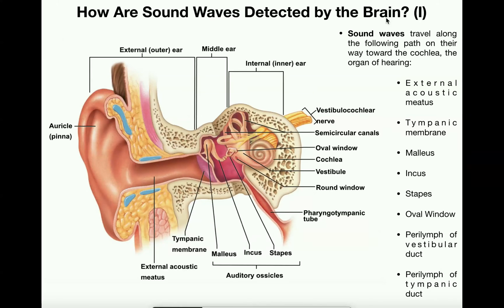Sound waves are pressure gradients that move through a medium. A medium could be the air, a wall if you can hear your neighbors, or even water. In any medium there are particles, and sound waves are disturbances or pressure gradients where those particles are being disturbed — vibrations. In the physiology of hearing, everything is dependent on vibrations.